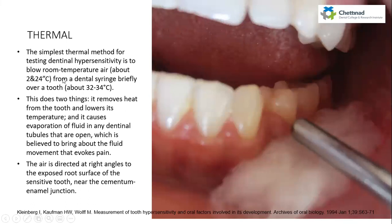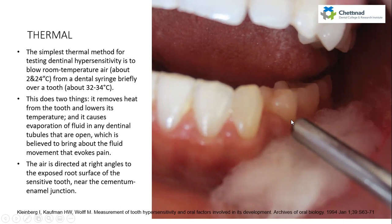Coming to thermal assessment, the simplest thermal method is to blow room-temperature air from a dental syringe briefly over a tooth. This removes heat, lowers the temperature, and causes evaporation of fluid in open dentinal tubules, which brings about the fluid movement that evokes pain. The air is directed at right angles to the exposed root surface near the cemento-enamel junction.